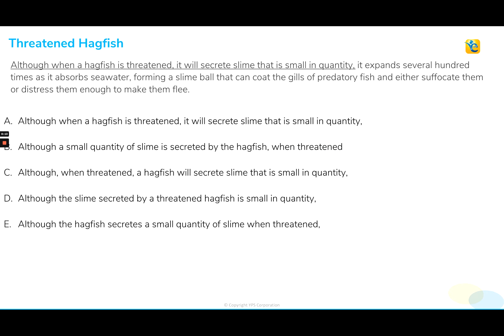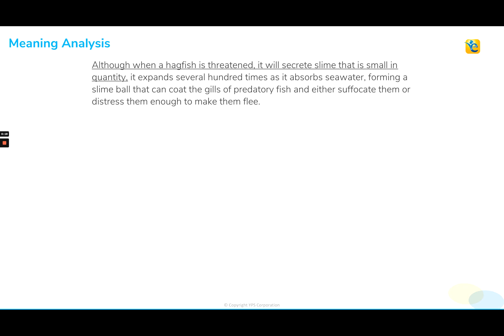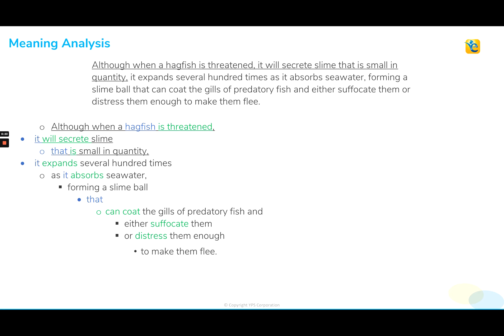First, we're going to read thoroughly through the sentence and extract the meaning. We're going to start with step one of the EGMAT three-step approach using that meaning analysis. We're going to utilize that sentence structure to really figure out what the author is intending to communicate here.